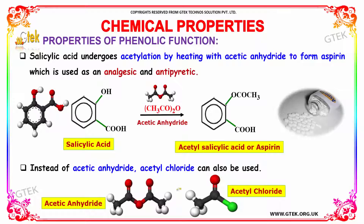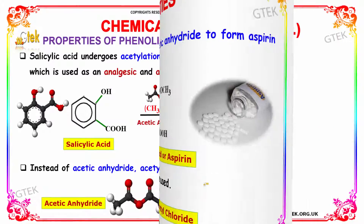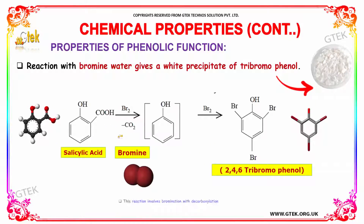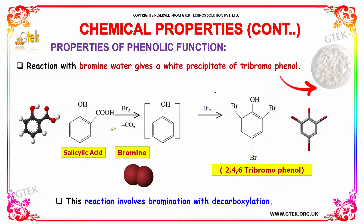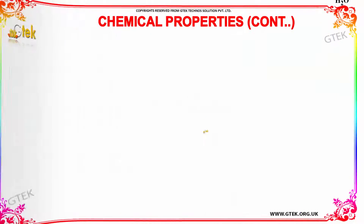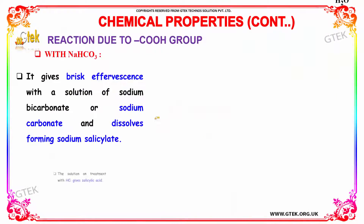Reaction with bromine water gives a white precipitate of tri-bromophenol. That is, salicylic acid when made to react with bromine produces 2,4,6-tri-bromophenol, which is a white precipitate. This reaction involves bromination with decarboxylation.